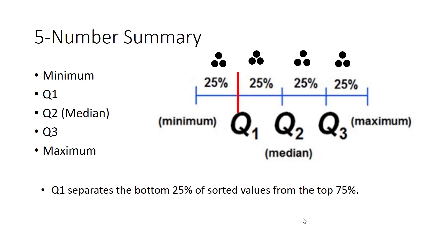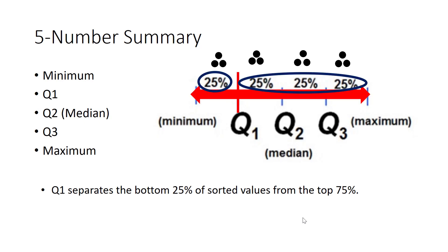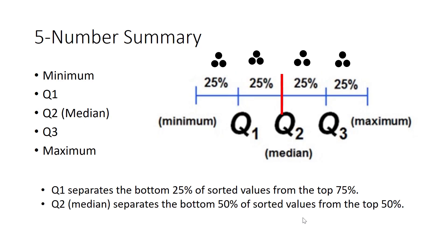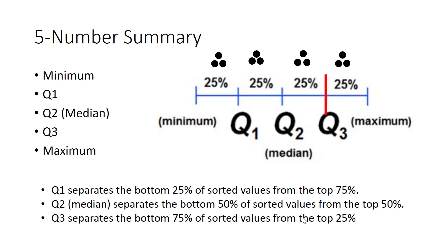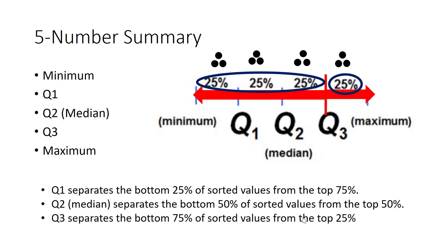Q1 separates the bottom 25% of the sorted values from the top 75%. Q2, or the median, separates the bottom 50% from the top 50%. Q3 separates the bottom 75% from the top 25%.